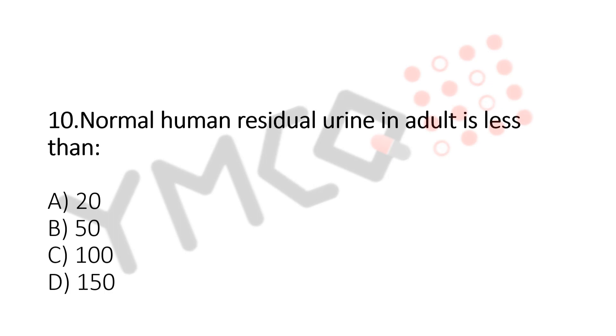Normal human residual urine in an adult is less than: A. 20, B. 50, C. 100, D. 150.